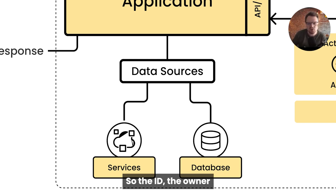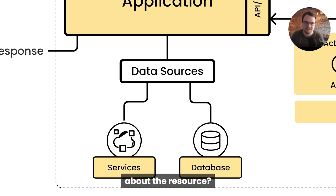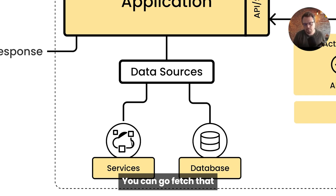So the ID, the owner, what team it belongs to, what organization it belongs to, or what other kind of application-specific data about the resource — you can go and fetch that.